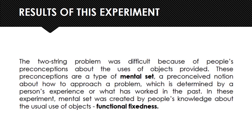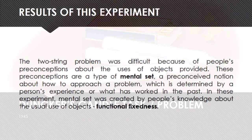Finally, the two-string problem was difficult because people's preconceptions about the uses of the provided objects came as a hindrance. These preconceptions are a type of mental set — a preconceived notion about how to approach a problem, determined by a person's experience or what has worked for them in the past. In this experiment, mental set was created by people's knowledge about the conventional use of objects, that is to say, their functional fixedness.